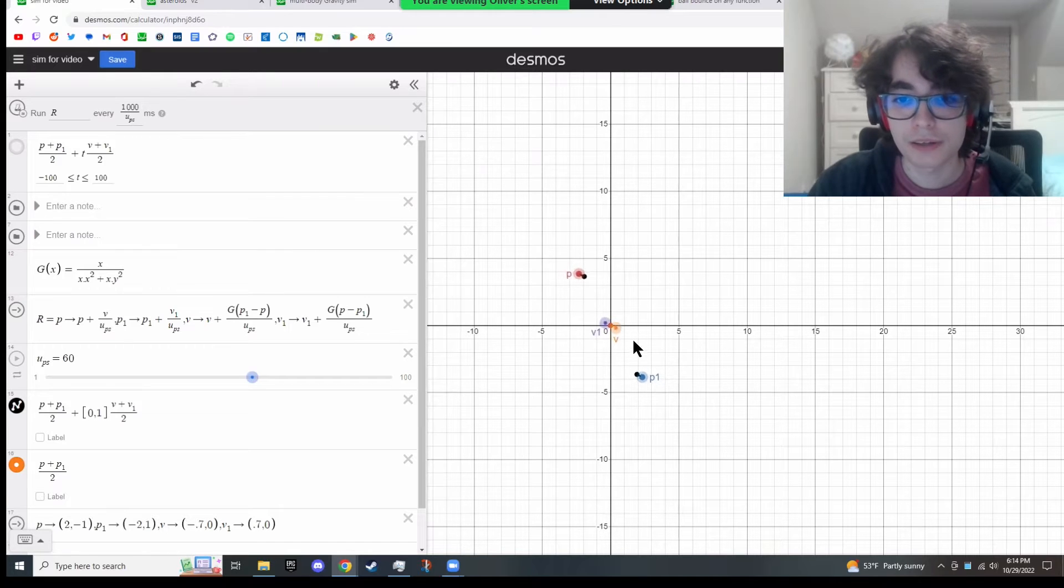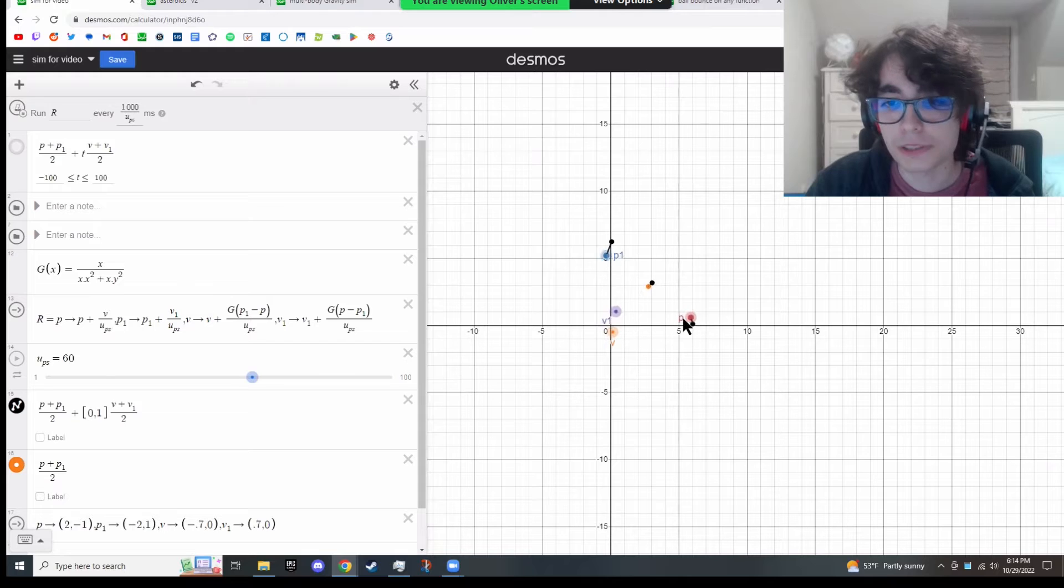But if I nudge the velocity, you can see that it follows a straight line. And the average velocity as well stays constant. And the average position perfectly follows that.